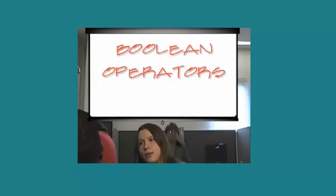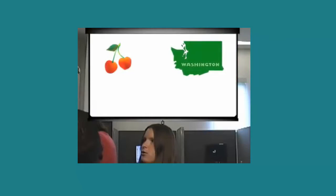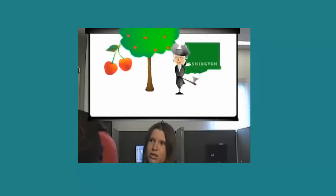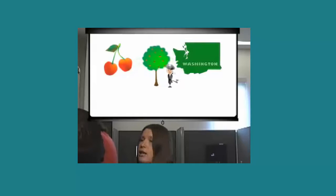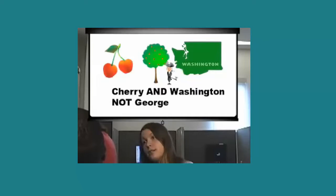Say, for instance, that you were wanting to do a search on the cherry industry in Washington State. You could do a search for cherry and Washington. But you'll also get, in addition to everything about the cherry industry, you'll get stuff with George Washington chopping down the cherry tree. So you can use another Boolean operator, NOT. You can go cherry and Washington, not George. And then everything to do with George Washington is going to fall away.